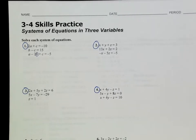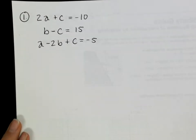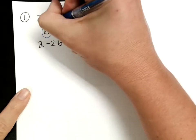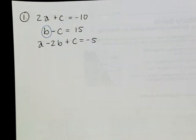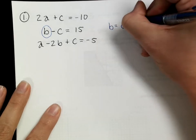There's not enough room on this page to do all this work, so I'm going to put it on a separate sheet of paper. The first equation is 2a + c = negative 10, b minus c = 15, a minus 2b + c = negative 5. I'm going to choose to solve for b, which gives me b = c + 15.